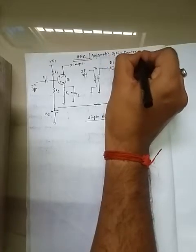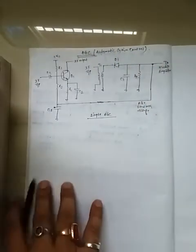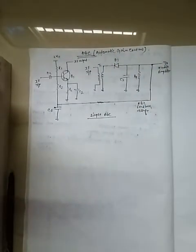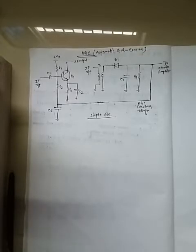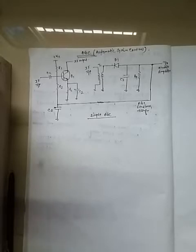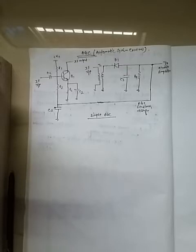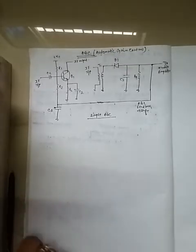Where is it used? AGC is used in the receiving section, in the receiver. Previously we discussed the superheterodyne receiver. In the superheterodyne receiver, the AGC circuit is used, means Automatic Gain Control.